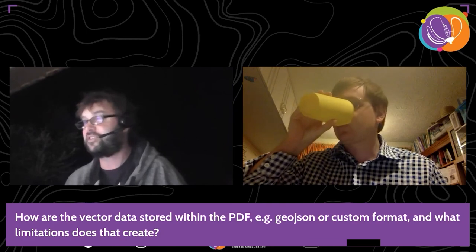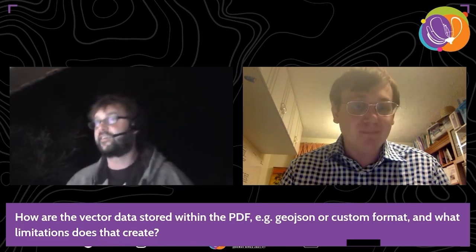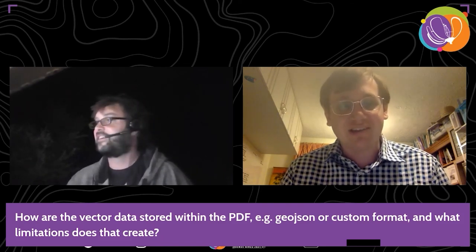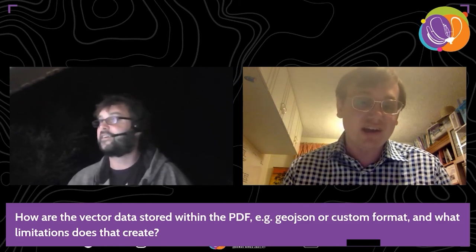How is the vector data stored within the PDF — for example, GeoJSON or a custom format — and what limitations does that create? I don't know, I'm afraid. There's probably a technical document explaining the internals. But whatever it is, it seems to have worked with everything I've thrown at it. It basically works as a kind of attachment to the PDF — a file attached inside — that things like QGIS and GDAL can read. I'm not entirely sure of the exact format.